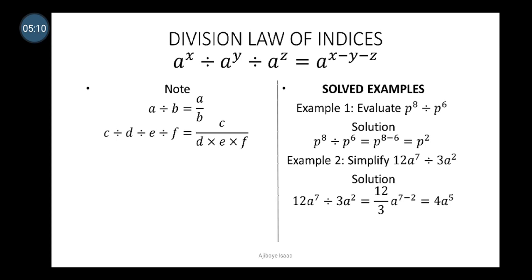Example 2: Simplify 12a raised to power 7 divided by 3a raised to power 2. The 12 and 3 are not index numbers, so we treat them as regular numbers and apply the laws of indices to the index parts. Solution: 12a⁷ ÷ 3a² equals (12/3) times a raised to power 7 minus 2. 12 divided by 3 is 4 and 7 minus 2 is 5, so the final answer is 4a raised to power 5.